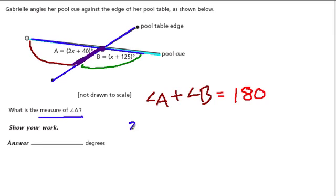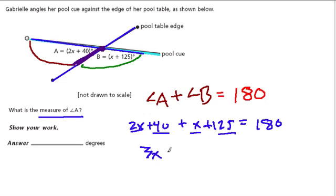So A is 2x plus 40 degrees, and B is going to be x plus 125. Together, they have to equal 180. So I'm going to combine my x's. I have three x's and my constants, 40 and 125. That's 165. And together, they have to equal 180.